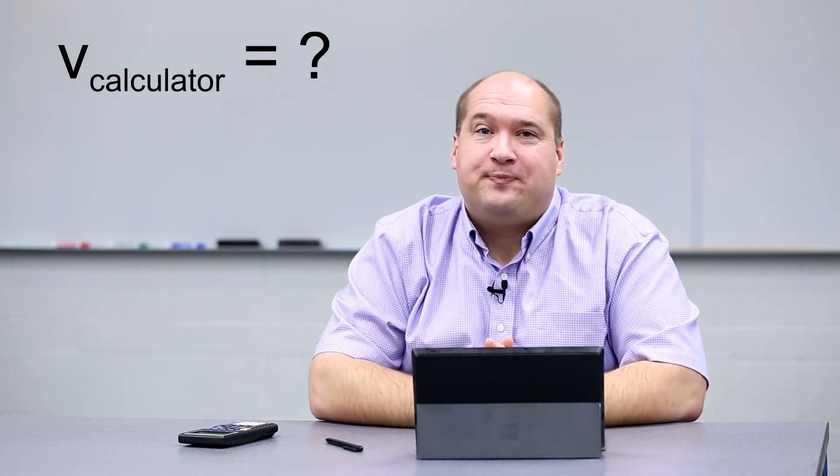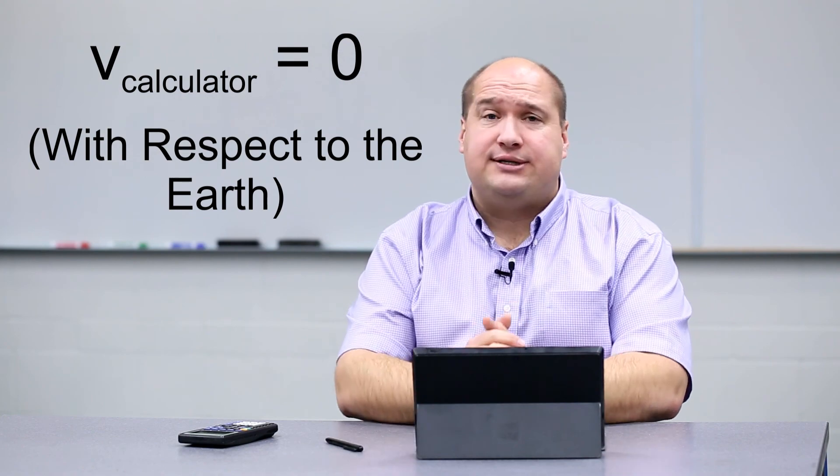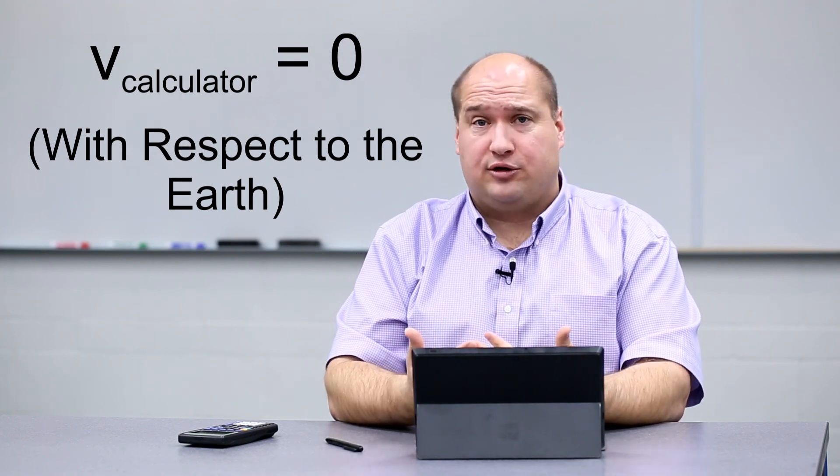What's the velocity of this calculator right now? The most intuitive answer is to say zero, and I want to be able to use that as an answer, but I want to explore the possibility that it's actually more complicated than that. This calculator is certainly not moving across my table. In the language of relative motion, the velocity of the calculator is zero with respect to this table — the table is being used as my frame of reference. Really, the table is anchored to the ground, which is part of the Earth, so the velocity of the calculator is zero with respect to the Earth at large.